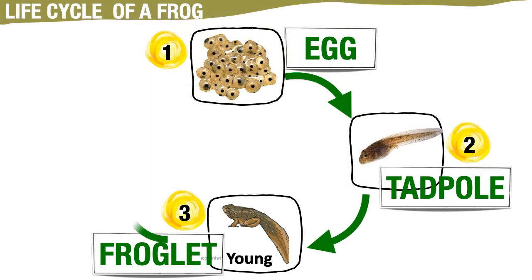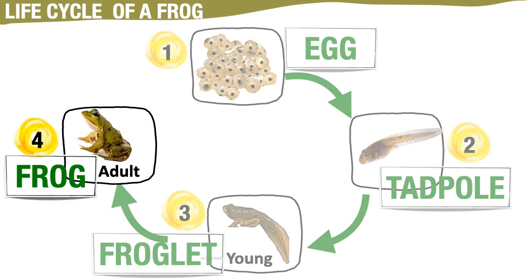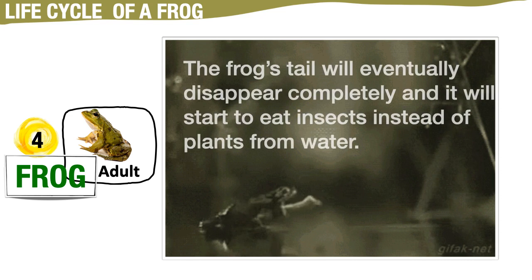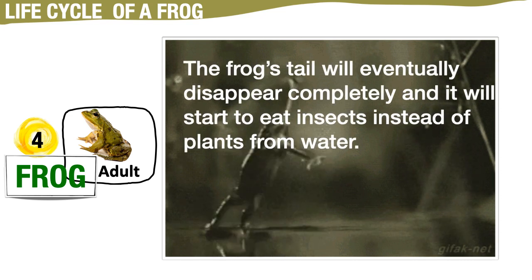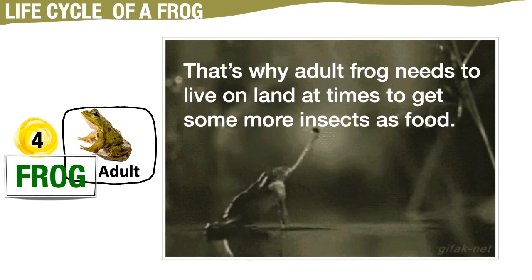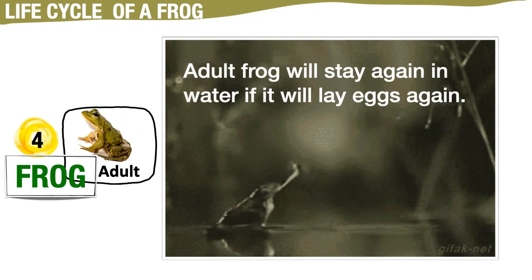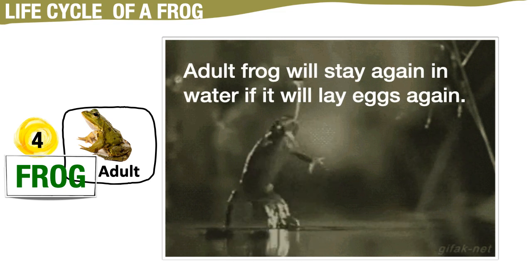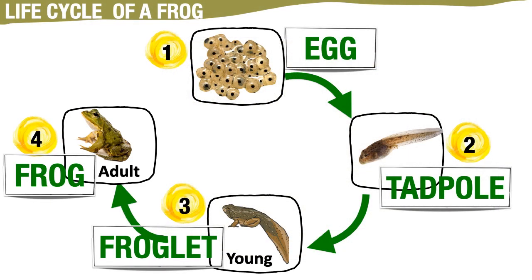From a young froglet, it will grow and develop into an adult frog. The frog's tail will eventually disappear completely and it will start to eat insects instead of plants from water. That's why the adult frog needs to live on land at times to get insects as food. The adult frog will return to water when it is ready to lay eggs again.